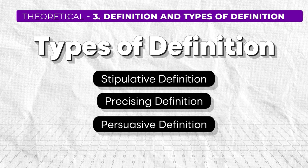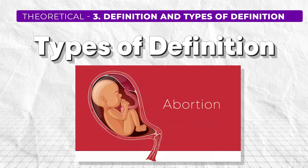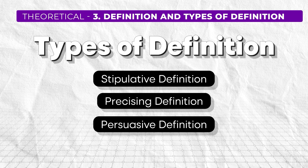The third kind of definition is persuasive definition. It is used when you want to persuade someone to think about a particular thing in a certain way. For example, a person who is against abortion might define abortion as 'the murder of an innocent child in the womb.' This definition tries to persuade you to think about abortion in a very negative way — it shows a particular bias. The examiner might ask you what a persuasive definition is, give you four options, or give you a definition and ask which kind it is — stipulative, precising, or persuasive.